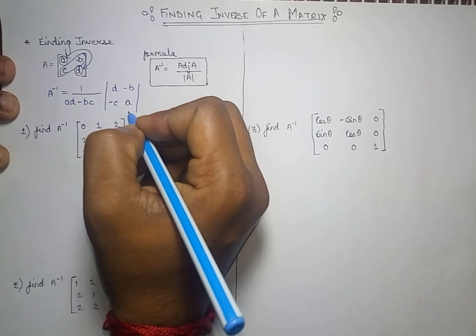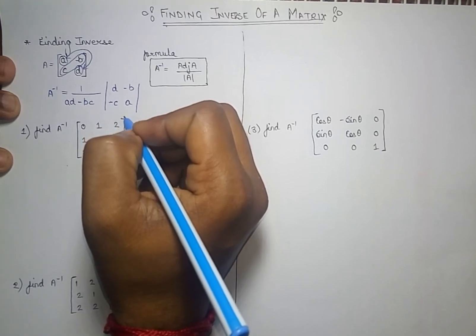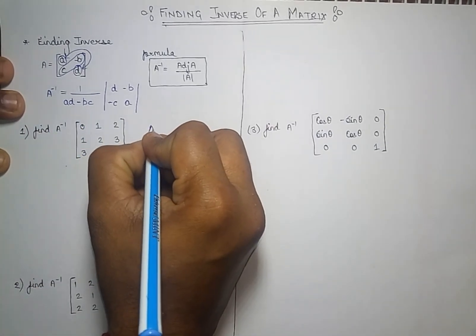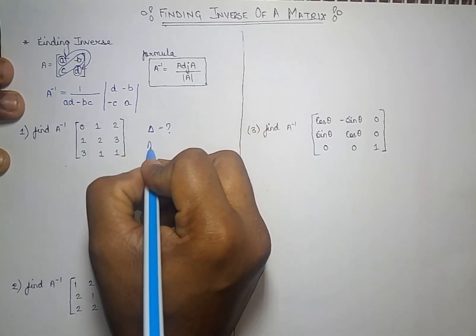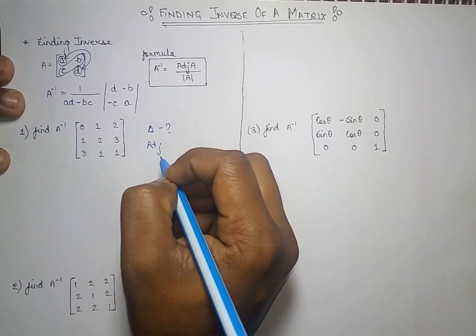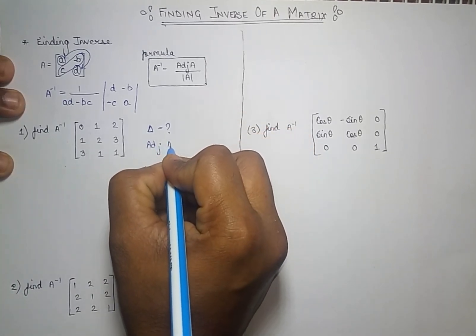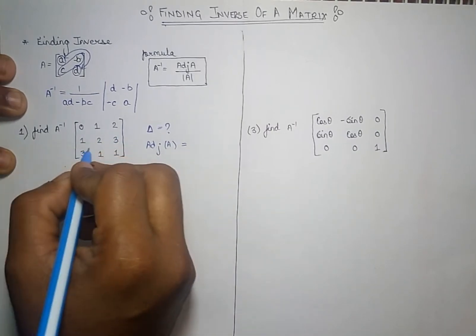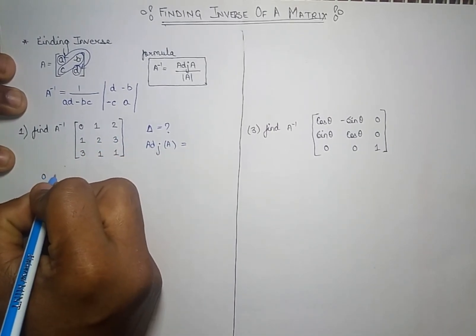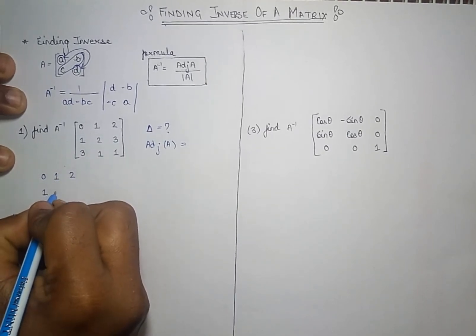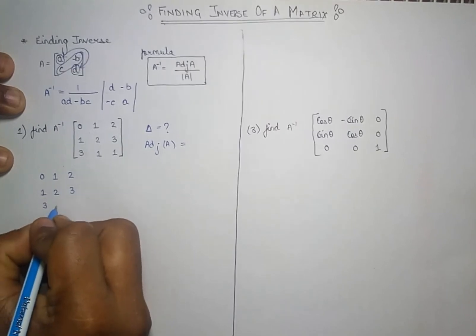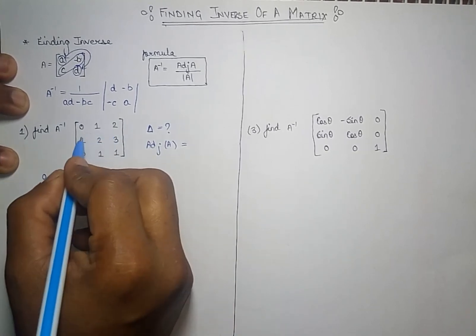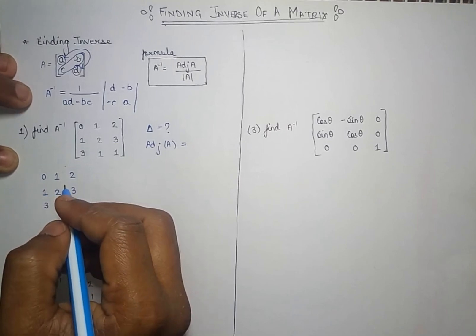Now I am going to share a trick to find the determinant as well as the adjoint for a 3×3 matrix. For finding the determinant, firstly write down the same matrix. Using this particular trick it will be easier to find out both the determinant and adjoint.